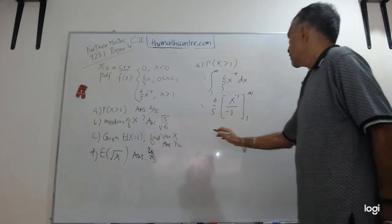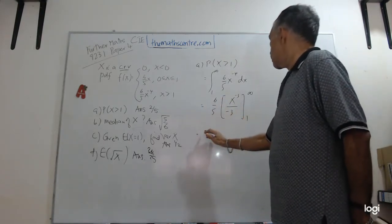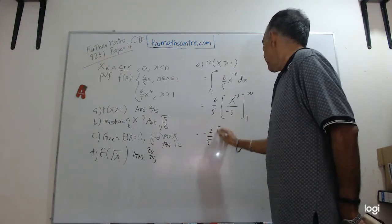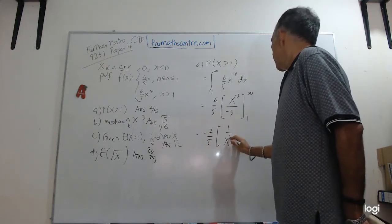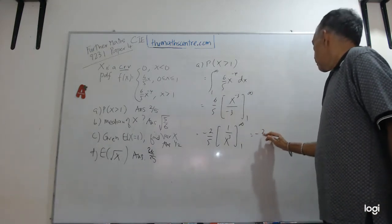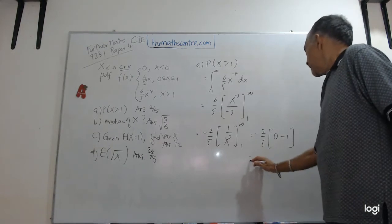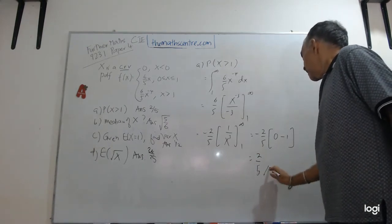So this will be, let's see, 6 over 5, there's 3 here, there's 2. So let me take out the... 1 over x cubed, and then I've been treating the 1, and this will be minus 2 over 5, 0 minus 1, and you'll get 2 over 5.